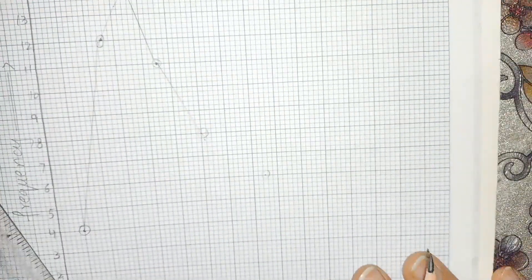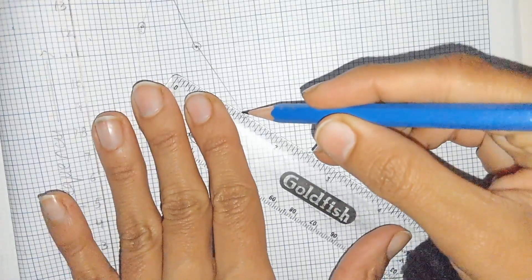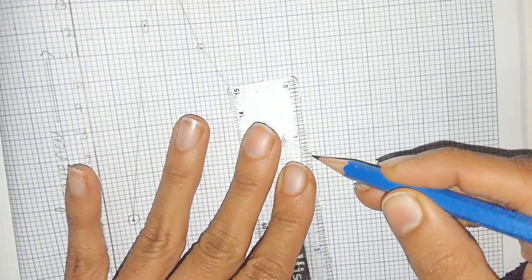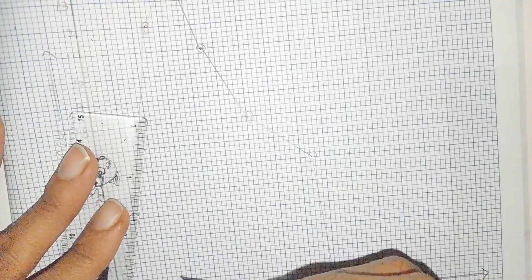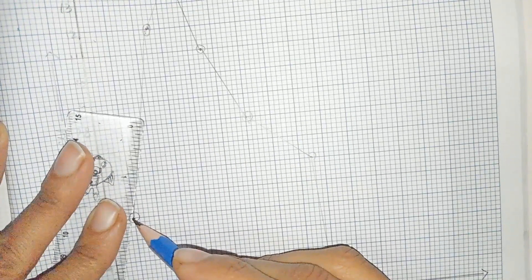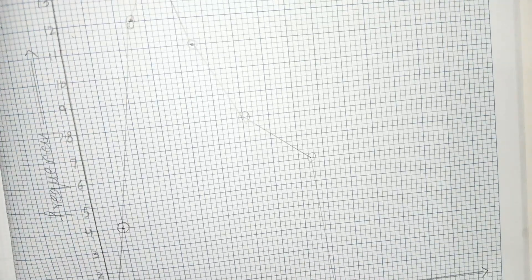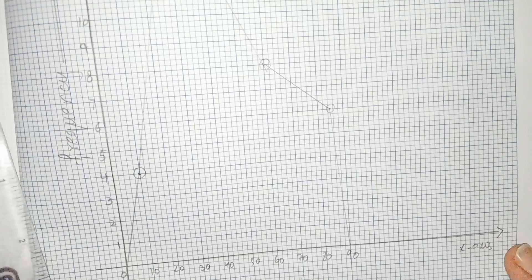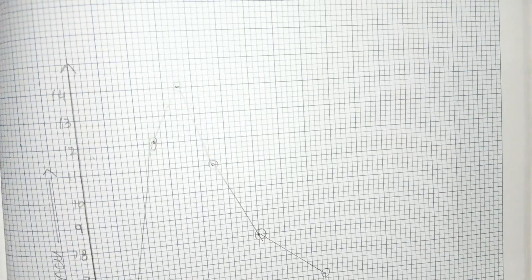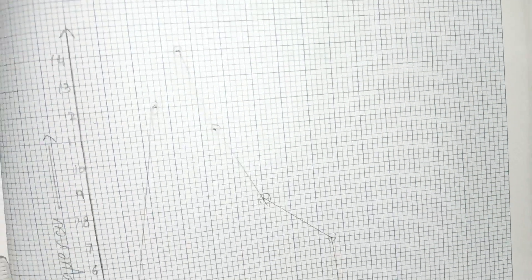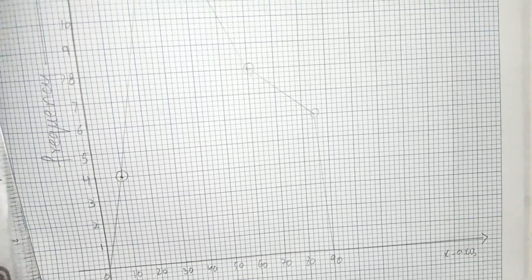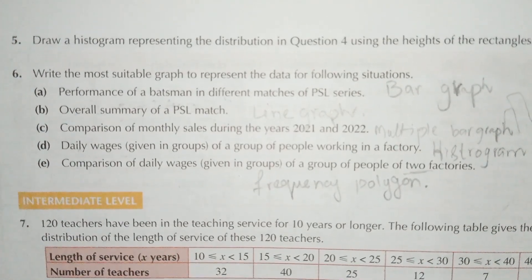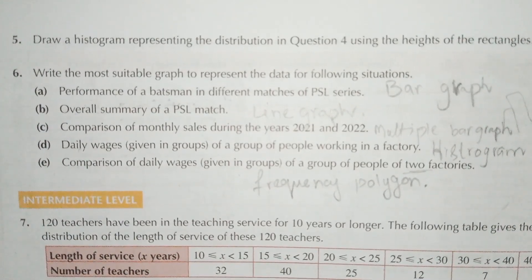We join these points and also connect the starting point with the origin. This is the frequency polygon. Now students, question number 4 is solved. Now question number 5: draw a histogram representing the distribution in question number 4 using the height of the rectangle.